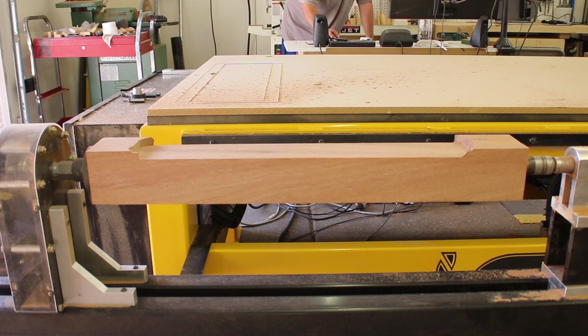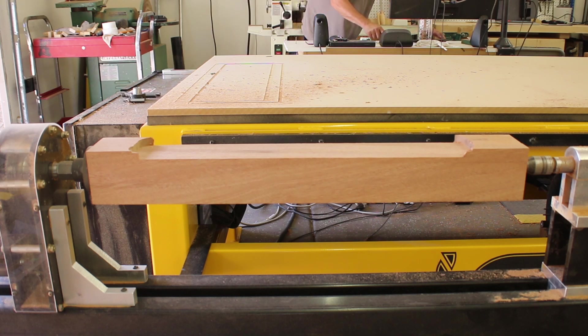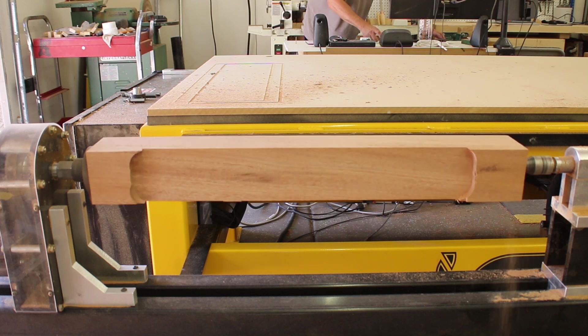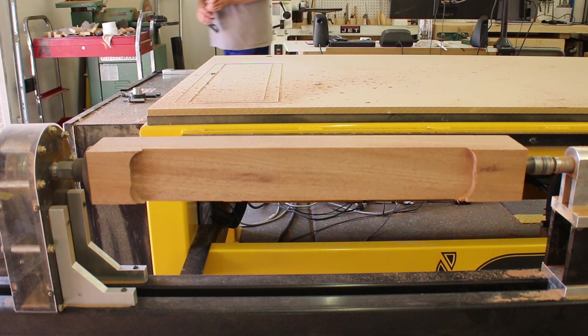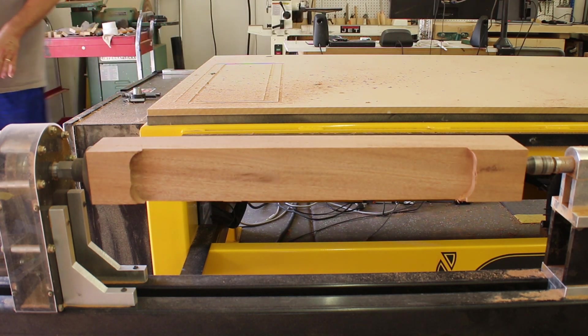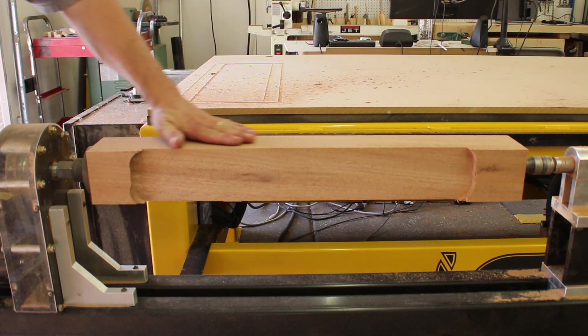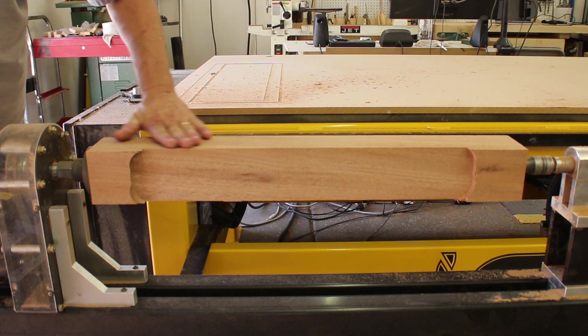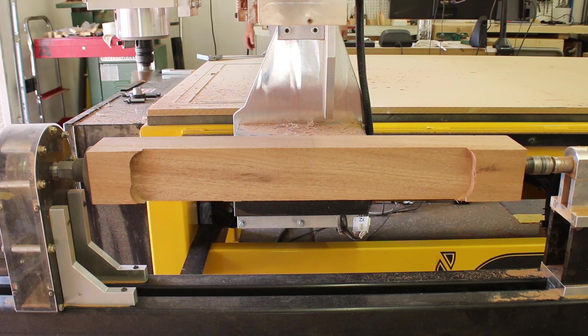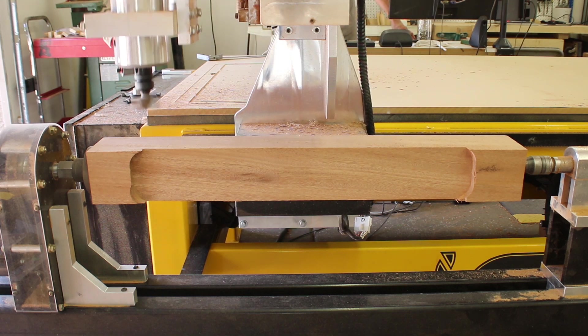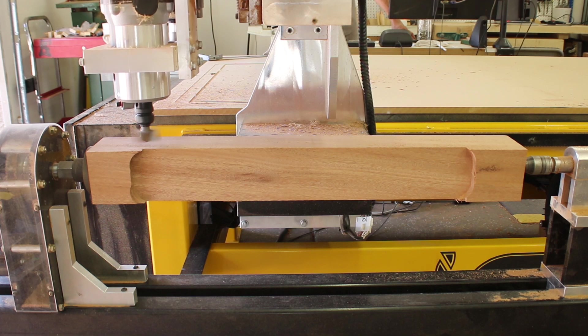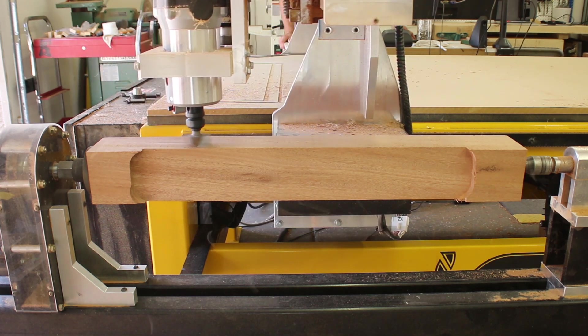Alrighty, and then what we'll do is we will hit A90 on the A axis. We're going to rotate it 90 degrees and we're going to run that same profile toolpath on this side of the material just as we did on side one. And we'll push start and we'll let this thing go through its cutting. I'll speed it up a little bit and then we'll come back and look at side three.